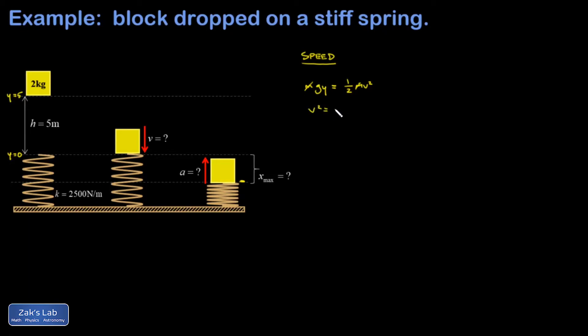I get v squared equals 2gy. I square root both sides, and v is the square root of 2gy, which is the square root of 2 times 9.8 times 5. And to 3 sig figs, I get 9.90 meters per second. So that piece is done.